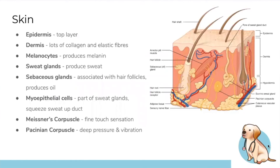A quick look at skin structure, which will be covered again in Semester 2: the top layer is the epidermis, below that is the dermis. Melanocytes produce melanin; sweat glands produce sweat; sebaceous glands produce oil; myoepithelial cells are muscle-like cells associated with sweat glands that squeeze to push sweat out. Meissner's corpuscles near the surface detect fine touch, and Pacinian corpuscles deeper down detect deep pressure and vibration.